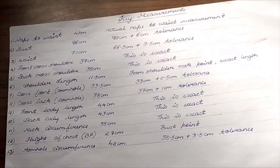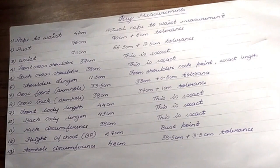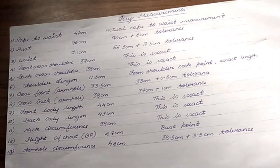In my previous video, I explained how to take measurements for the basic bodice block. In this video, I will explain how to draft the basic bodice block. As you are only drafting half the pattern, you will need to divide all the width measurements and tolerance circumference by half.